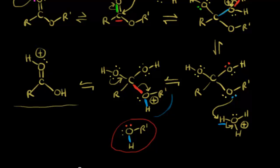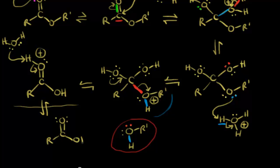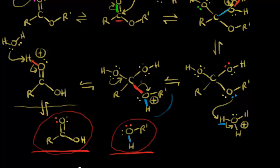We're almost done — this is really close to a carboxylic acid. All we have to do is deprotonate. Another molecule of water comes along and acts as a base, takes this proton, leaves these electrons behind, and that gives us our carboxylic acid. So drawing in our R group and our OH, we get our carboxylic acid as our product. So there's the mechanism for acid-catalyzed ester hydrolysis, which produces a carboxylic acid and an alcohol. We lose our alcohol as one of our products to also give us our carboxylic acid.